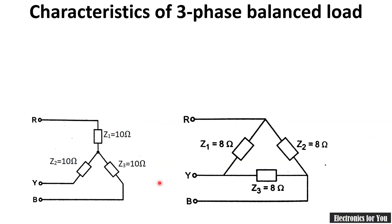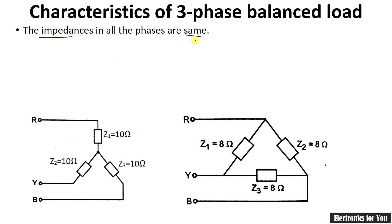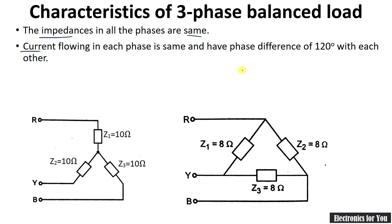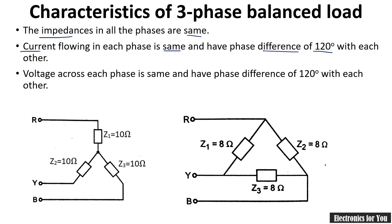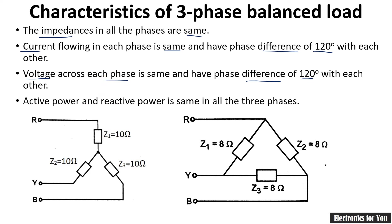Now let us see the characteristics of a three-phase balanced load. In this case, all impedances are the same, so the current flowing through each phase is also the same with a phase difference of 120 degrees. The voltage across each phase is also the same with a phase difference of 120 degrees. Similarly, the active and reactive power will also be the same in the case of a balanced load.